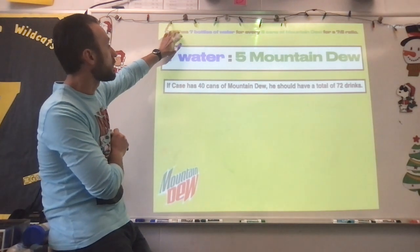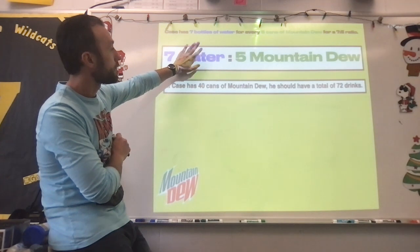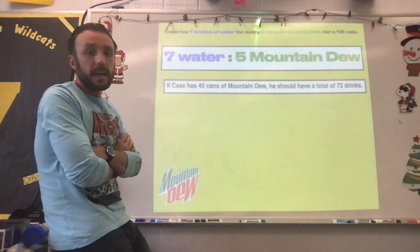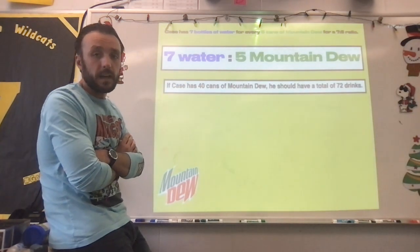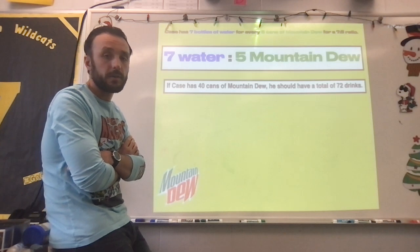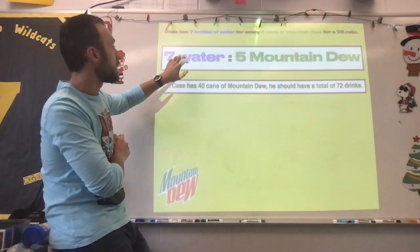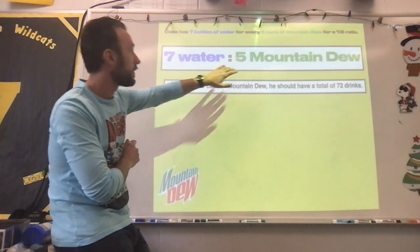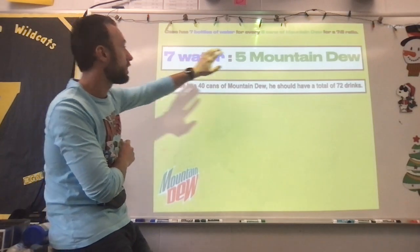So our main statement, I know it's kind of small, but it's paraphrased right here. It says Case has seven bottles of water for every five cans of Mountain Dew, a seven to five ratio. So he has seven bottles of water, five cans of Mountain Dew.